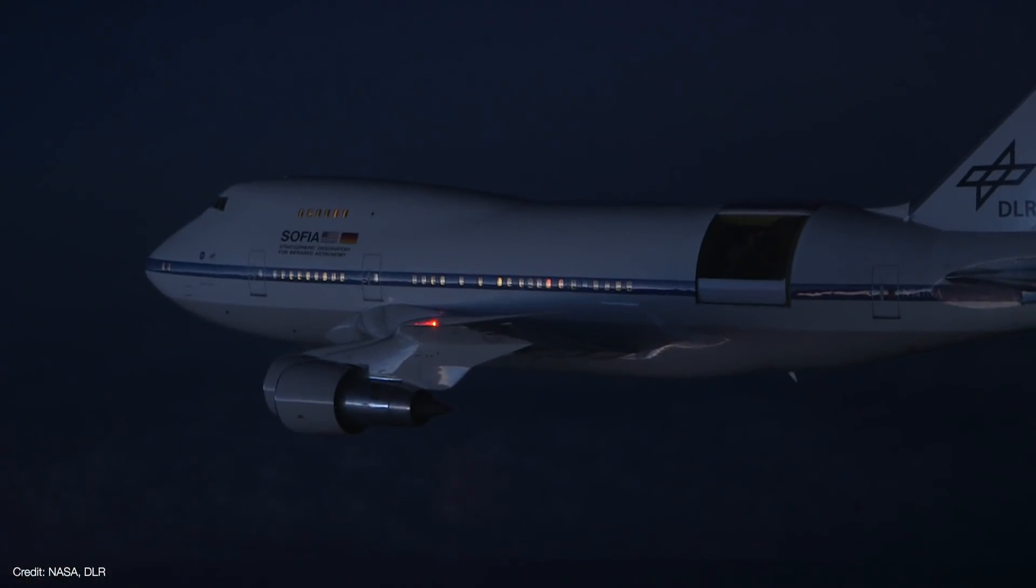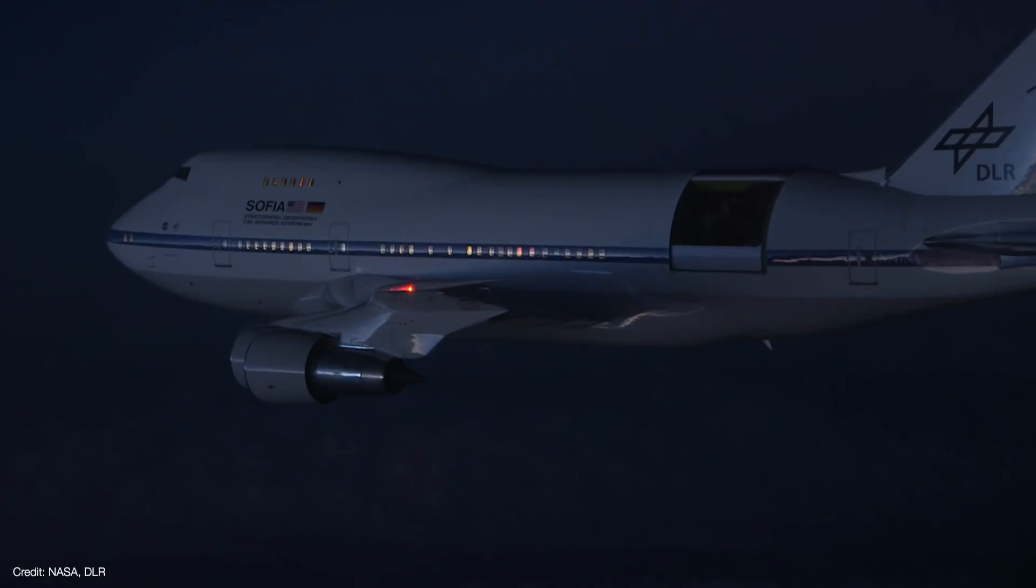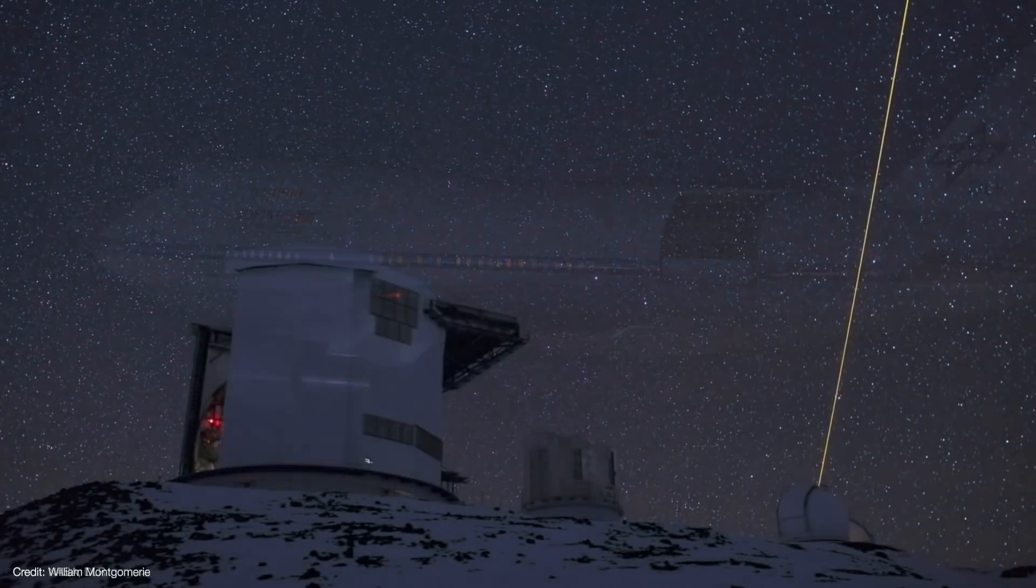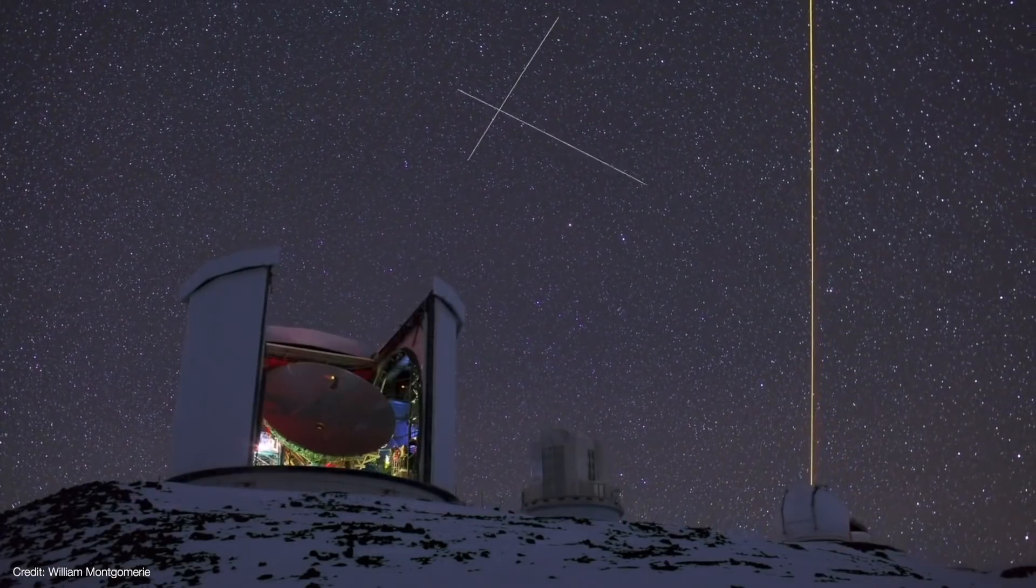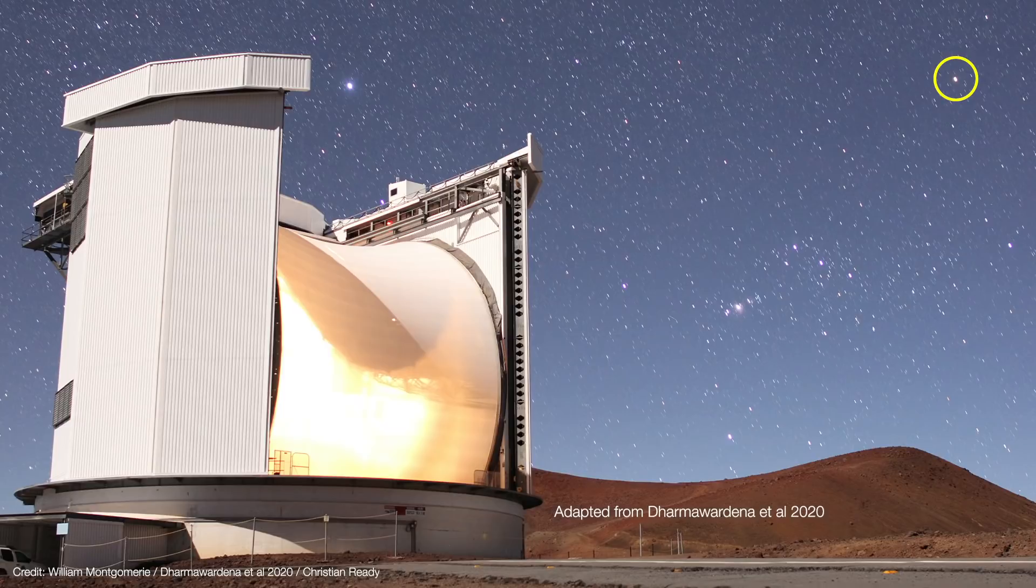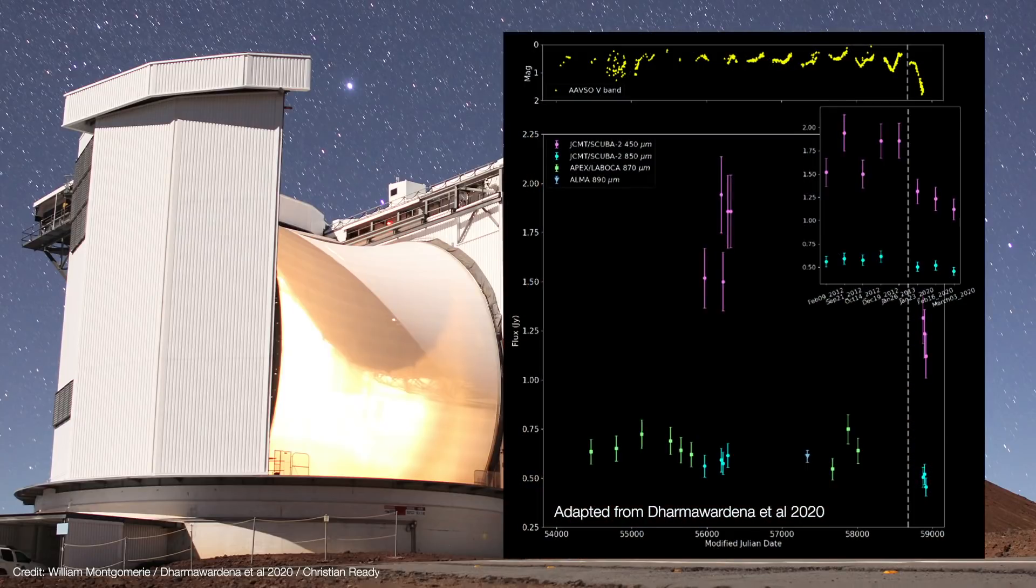Could this be what really happened to Betelgeuse? It's certainly plausible, but there are still some missing pieces. For example, if dust were produced, it should be warmed by the star and radiate in the infrared and microwave. But observations made with the SOFIA infrared telescope during the Great Dimming didn't show any excess radiation in the infrared. Not only that, but millimeter wavelength observations made with the James Clerk Maxwell telescope in Hawaii showed that Betelgeuse was actually fainter in the microwave part of the spectrum as well. If anything, that's the opposite of what you'd expect to see if dust were being heated. Neither of these observations necessarily disprove the dust model, but they leave the door open for alternative models such as large star spots or rapidly cooling convection cells.